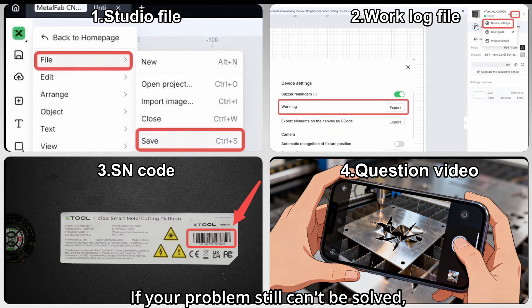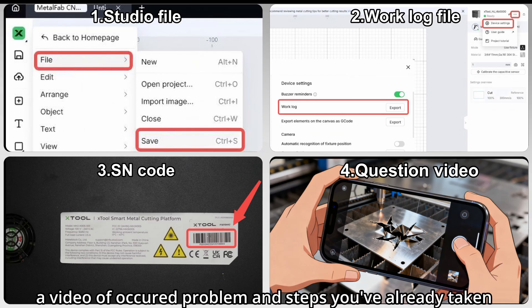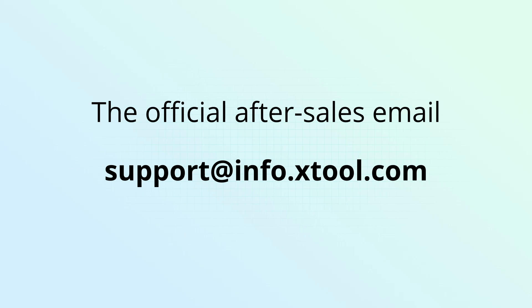If your problem still can't be solved, please send us the four pieces of information above. Screenshots of the studio file and the work log. A photo of the machine's S-Encode. A video of the occurred problem and the steps you've already taken. Send them to our after-sales email and we'll connect you right away.